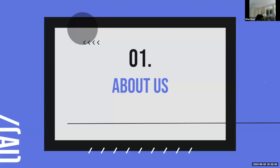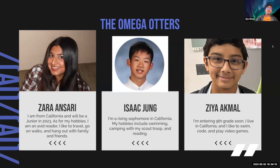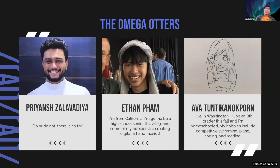We're all going to briefly introduce ourselves. My name is Zara and I worked on the AI training and back-end portion of the project. I'm from California, a rising junior, and I like to read, travel, and hang out with family and friends. My name is Isaac, a rising sophomore in California. My hobbies are swimming, camping, and reading, and I worked on the pre-processing part of this project. My name is Zia, I'm entering ninth grade soon and I live in California. I like to swim, code, and play video games, and I worked on the AI training portion.